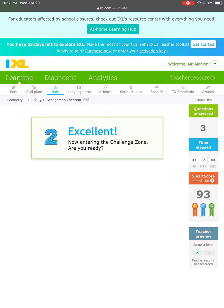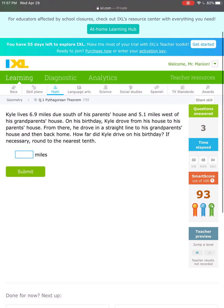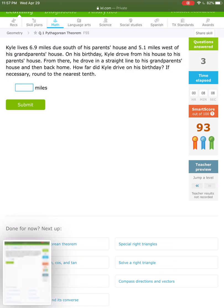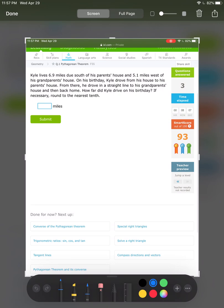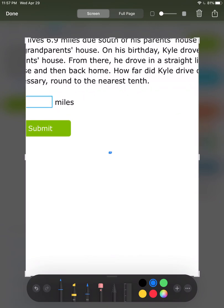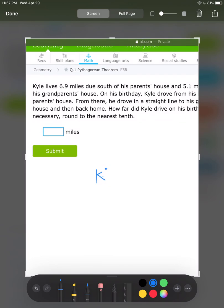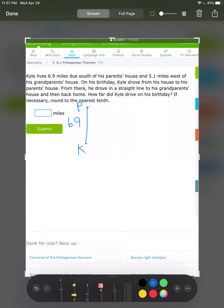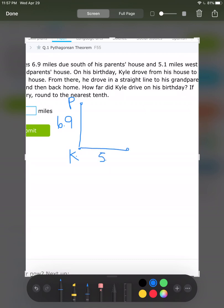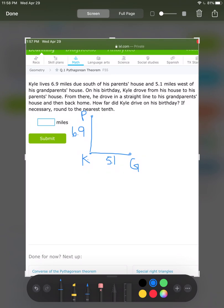This looks to be the same type of question. Kyle lives 6.9 miles due south of his parents' house. Let me draw this. This is Kyle. His parents are up here at 6.9 miles, and 5.1 miles west of his grandparents. On his birthday, he drove from his house to his parents', then to his grandparents', then back home. How far did Kyle drive?